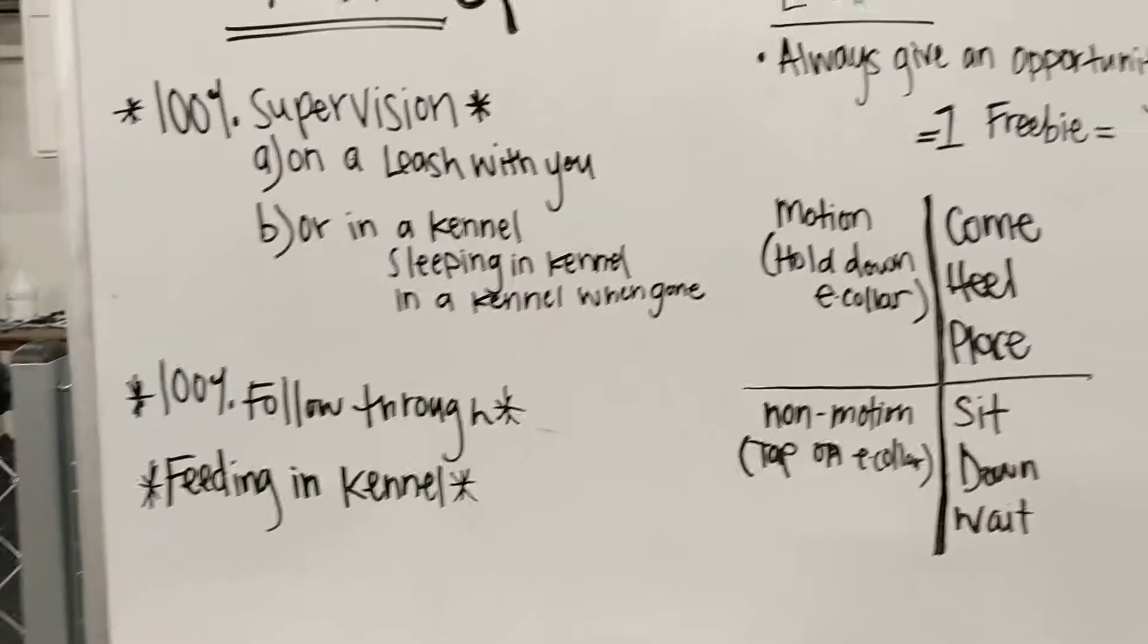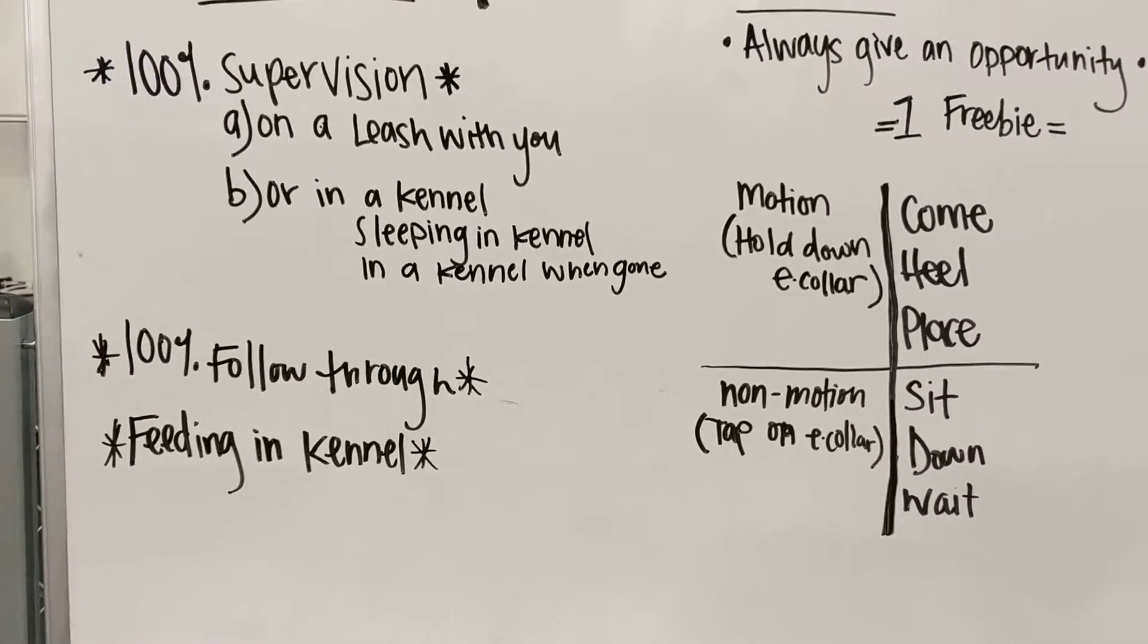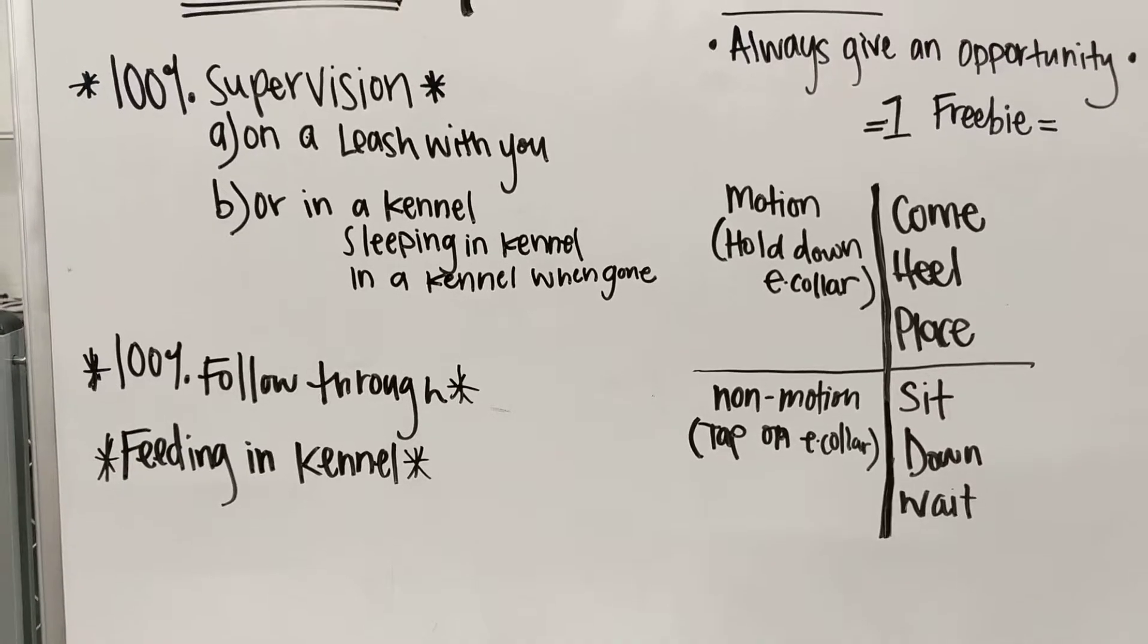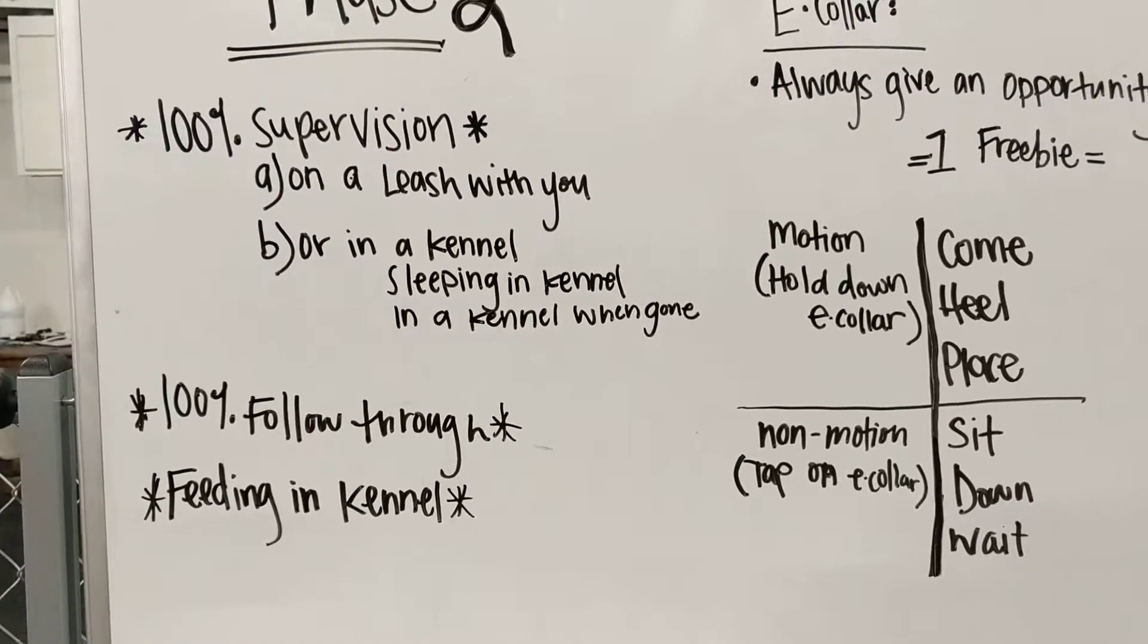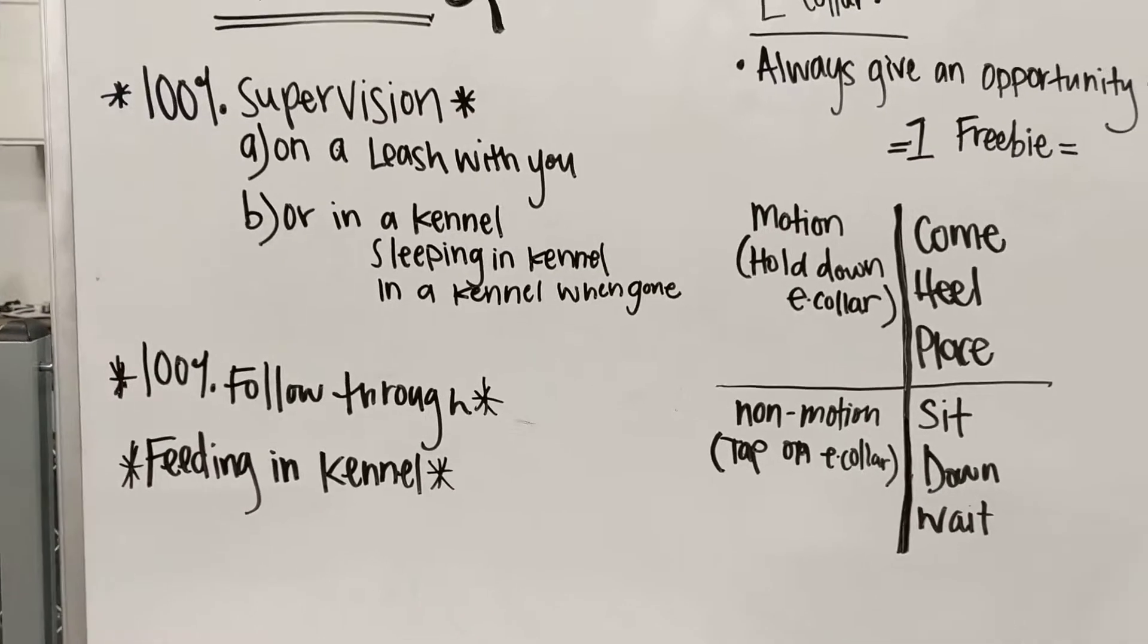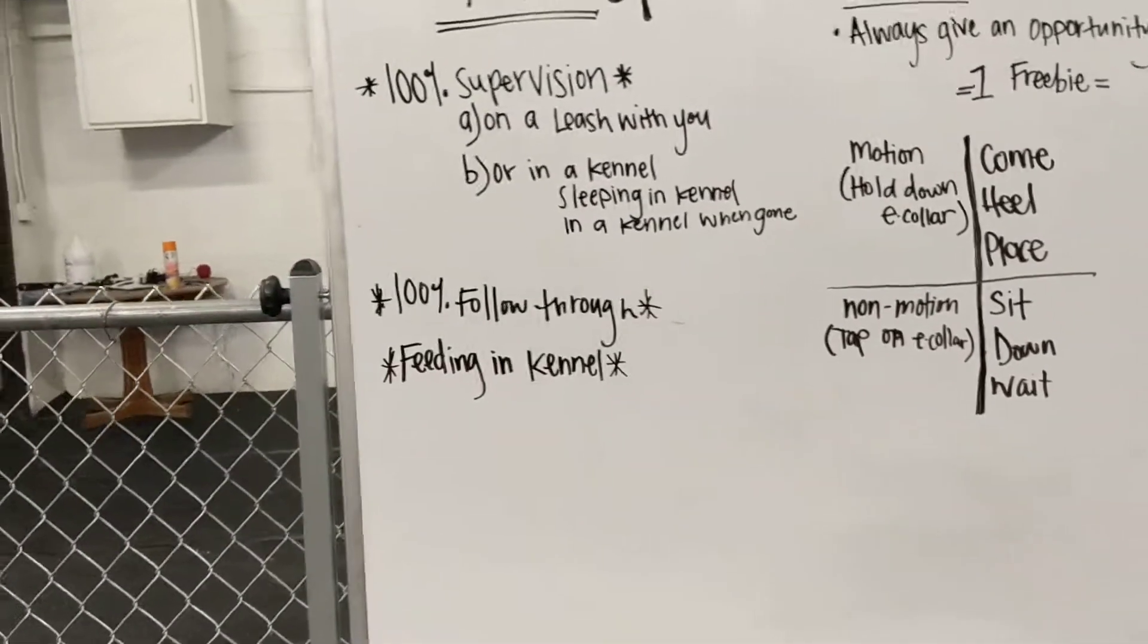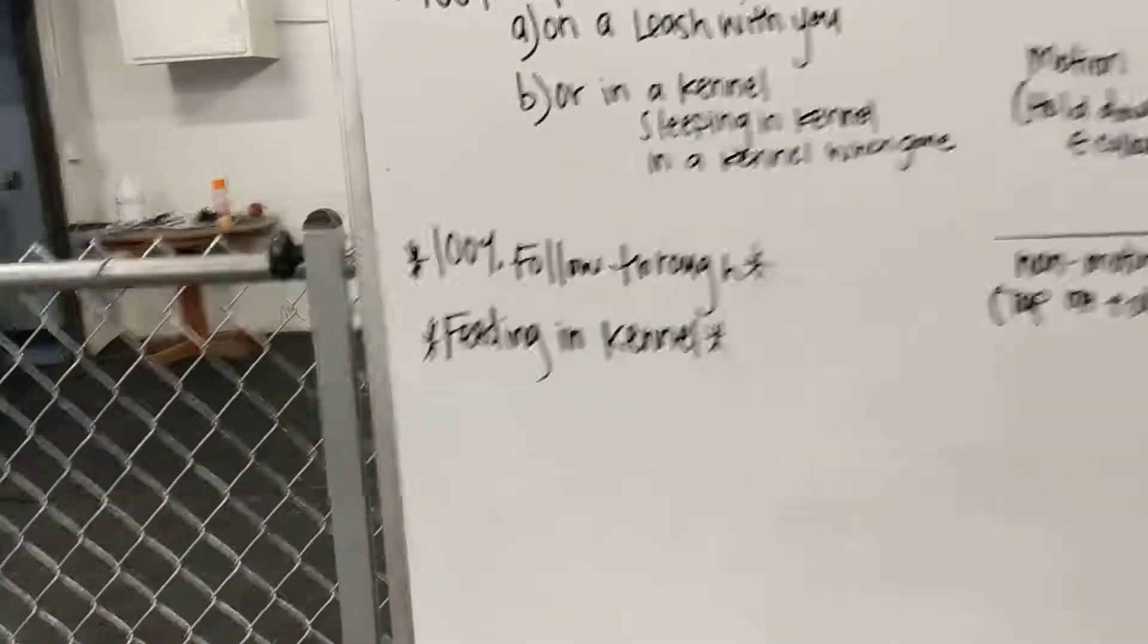Phase three is where we can start allowing more freedoms. They get out of the crate more. They get to be hanging out a lot more in your house. You know, less supervision is required because they're being good. But this is really a critical period.